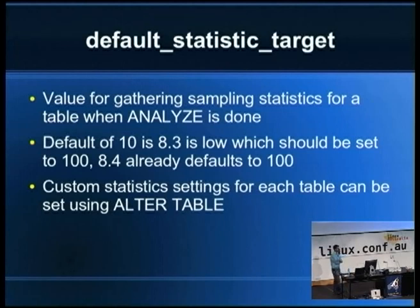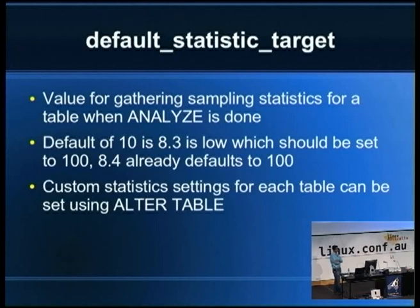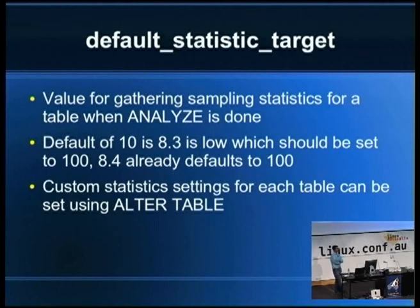Next is default_statistics_target, which sets the amount of sampling done on a table when ANALYZE runs. ANALYZE collects statistics used for optimizing query plans. The default value is 10 in 8.3, which is too low — it should be set to at least 100. It depends on your query workload; if the query plan isn't what you want, you likely need to raise this value so Postgres can gather better statistics.